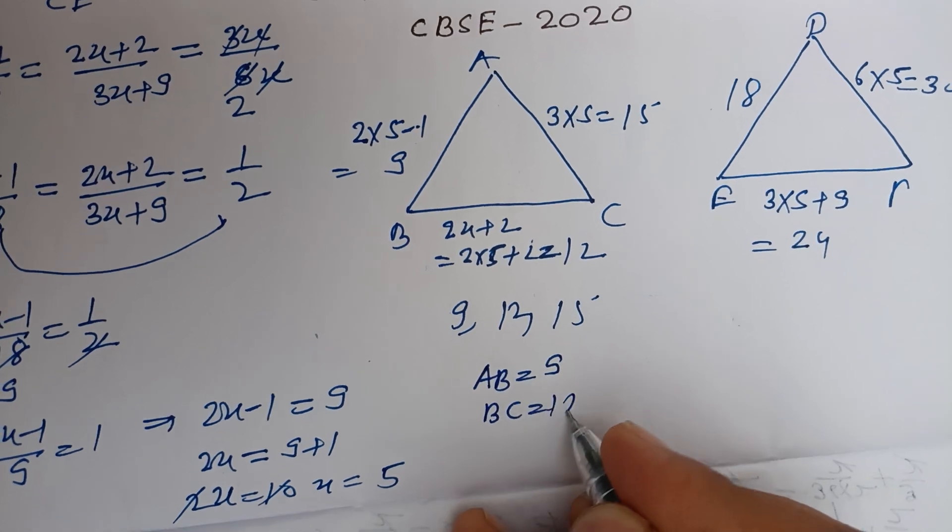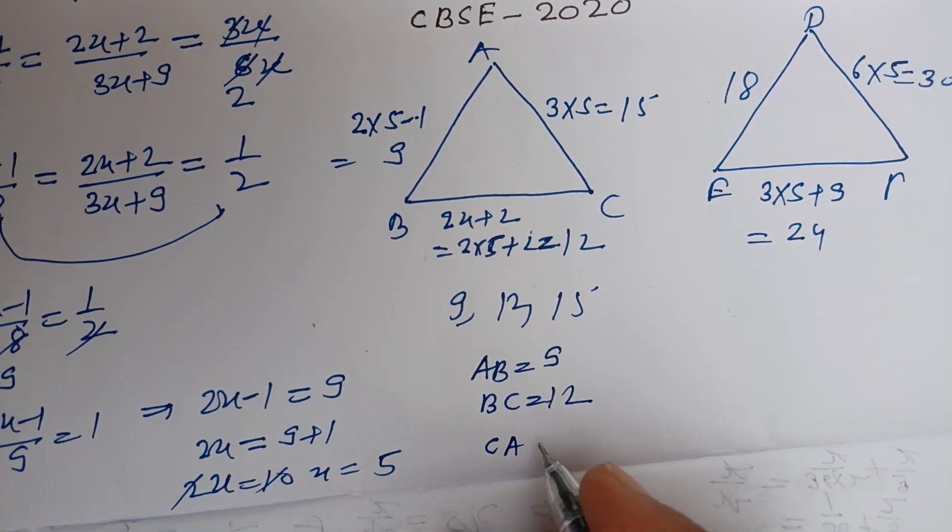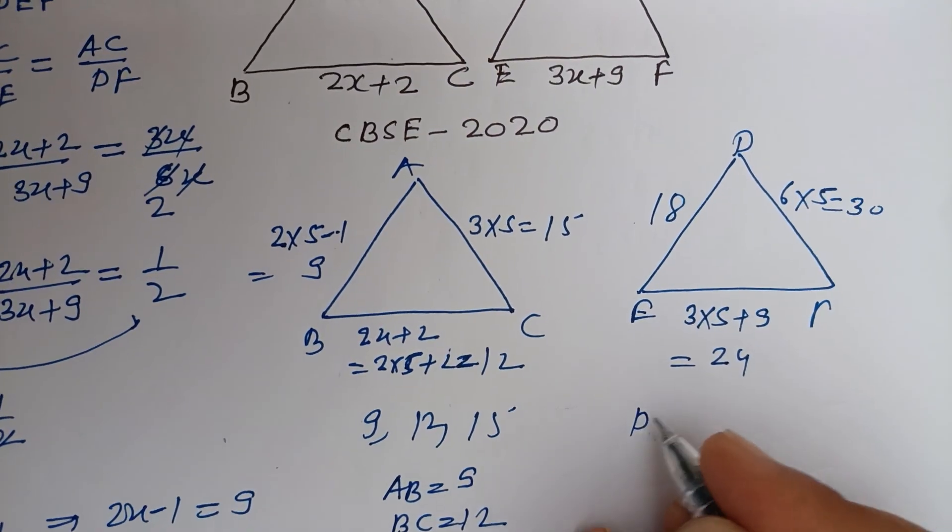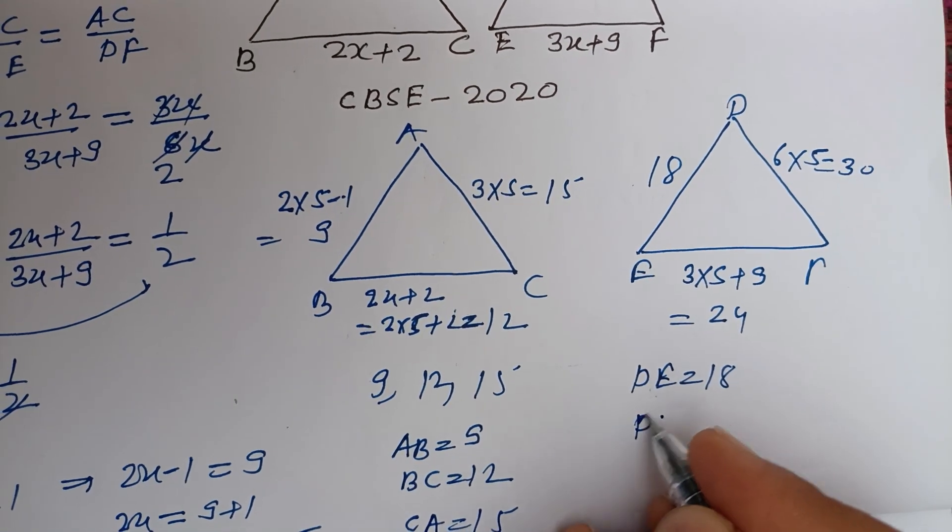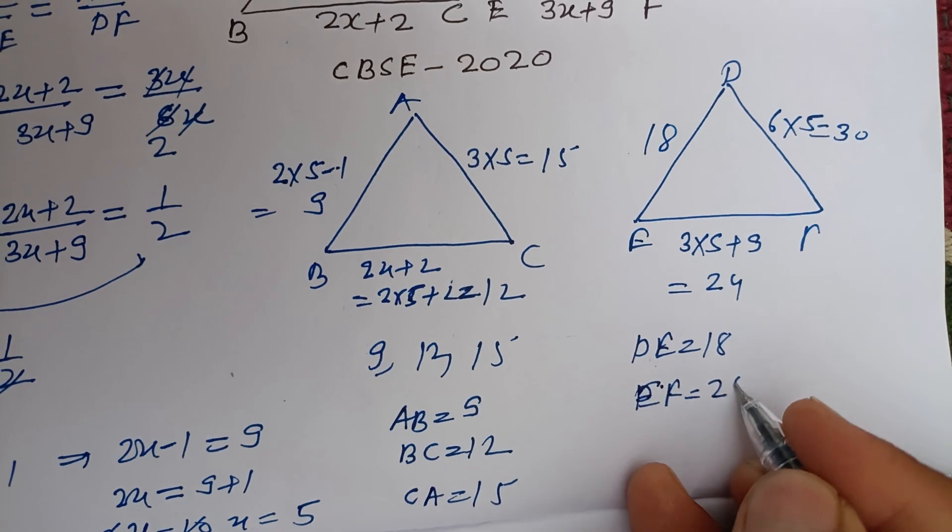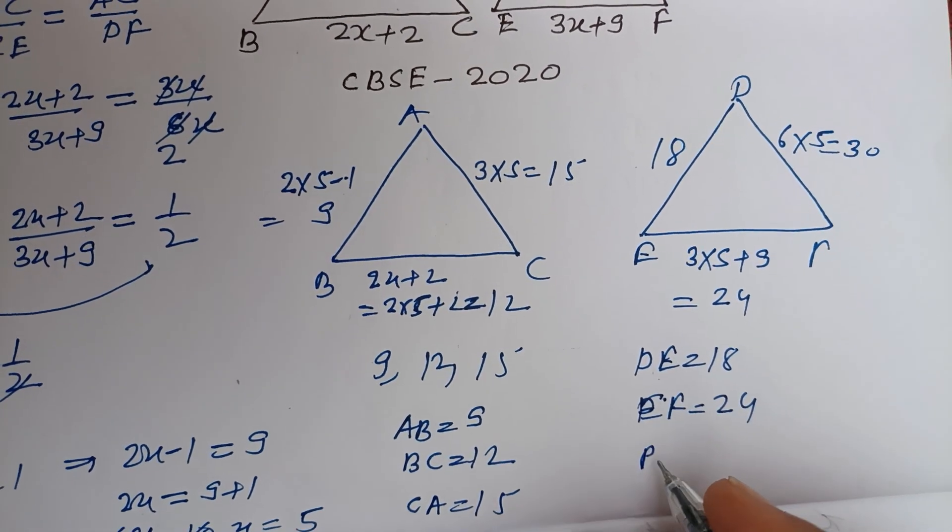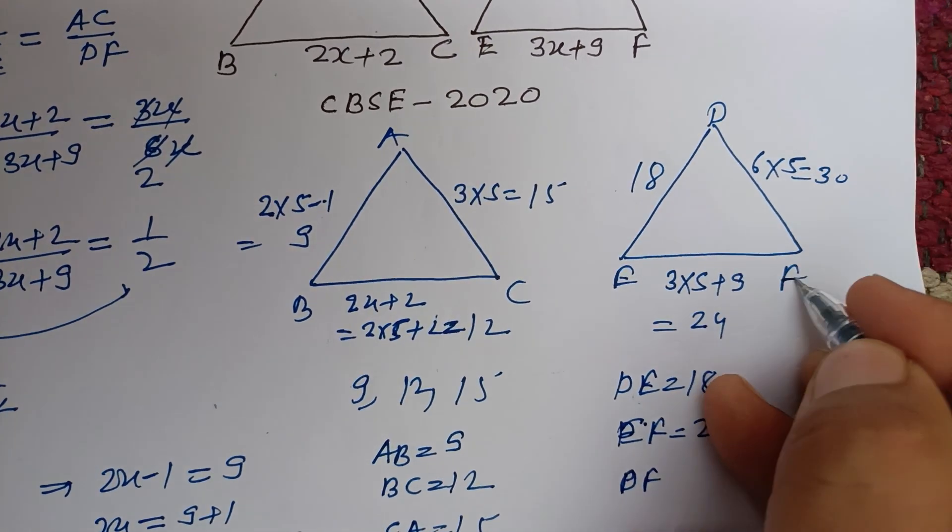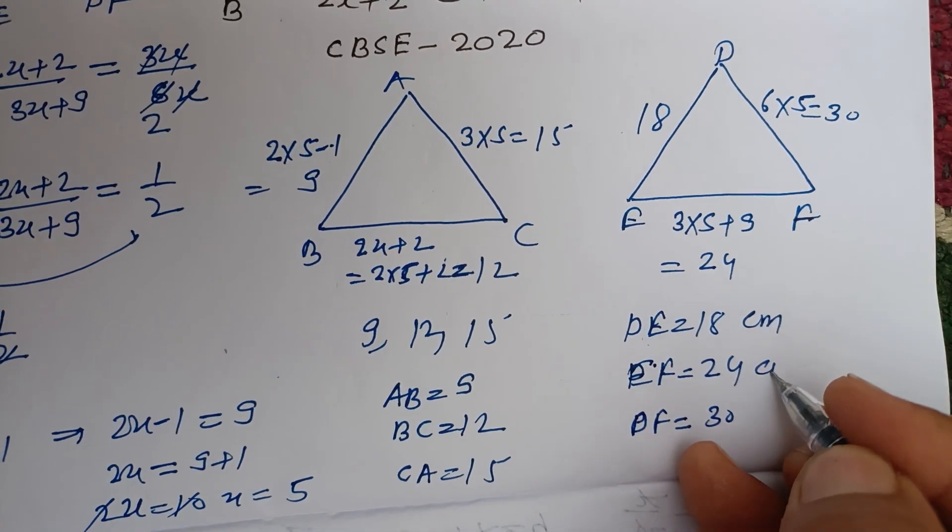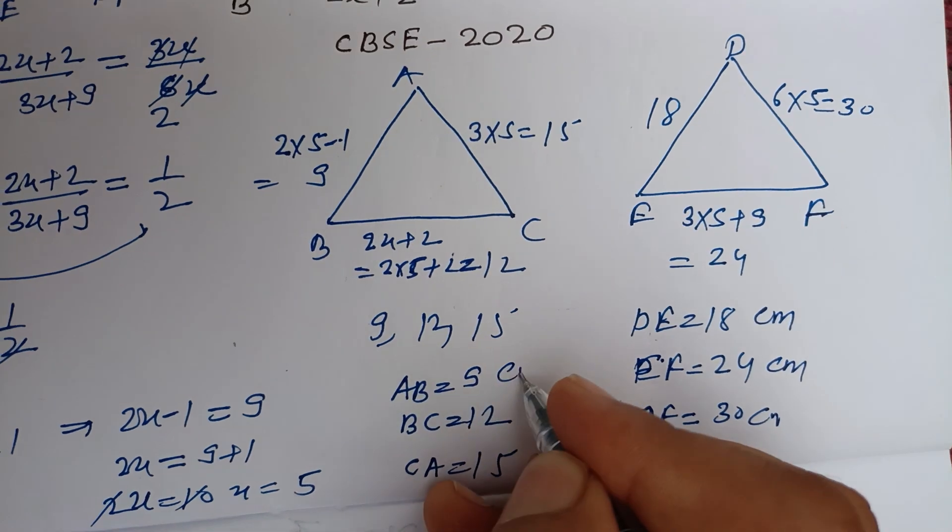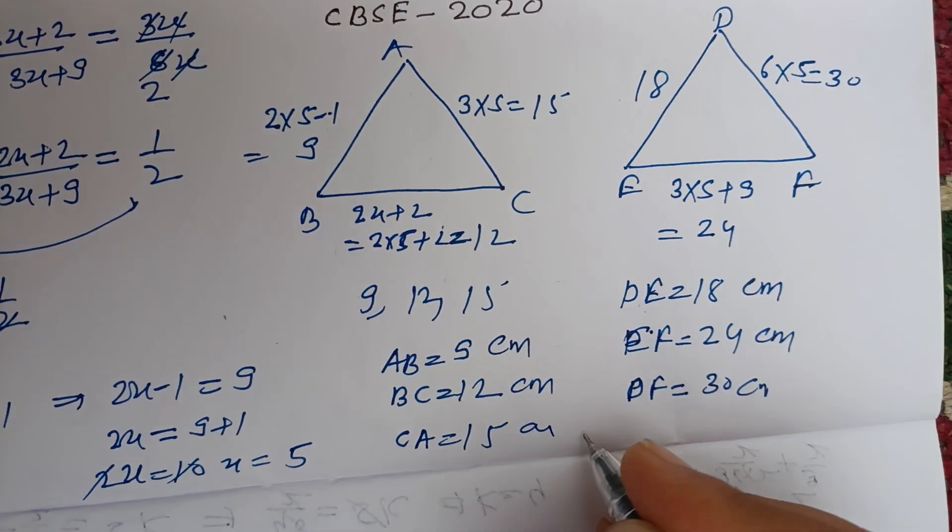BC is 12, CA is 15, DE 18, EF 24, and DF is 30 cm. So these are our answers.